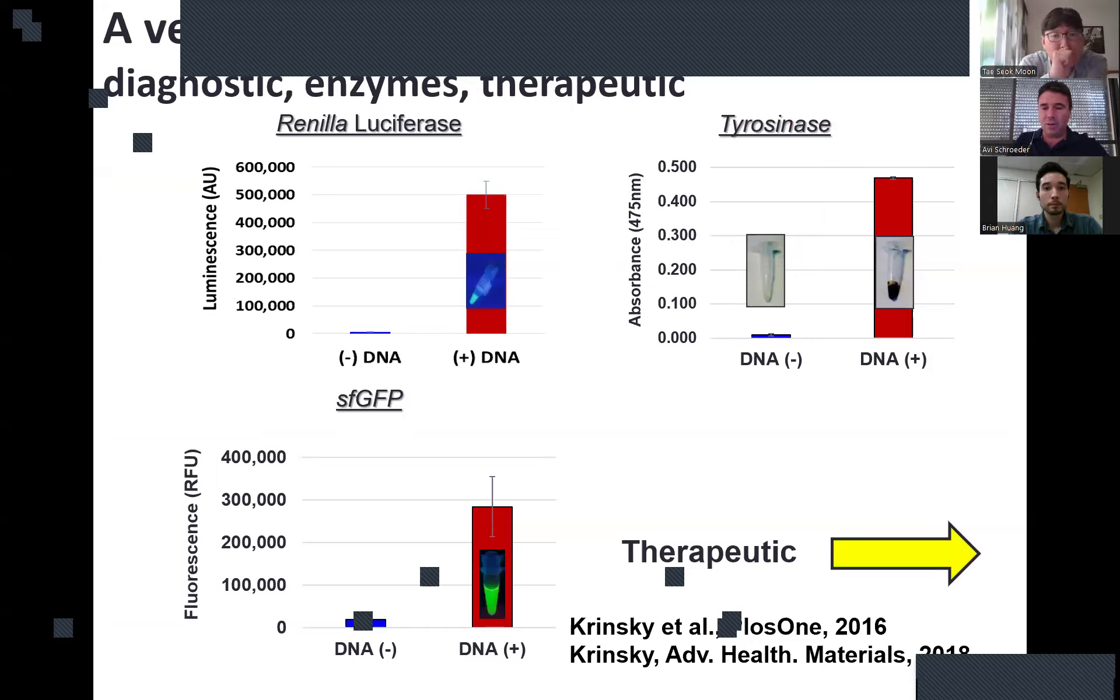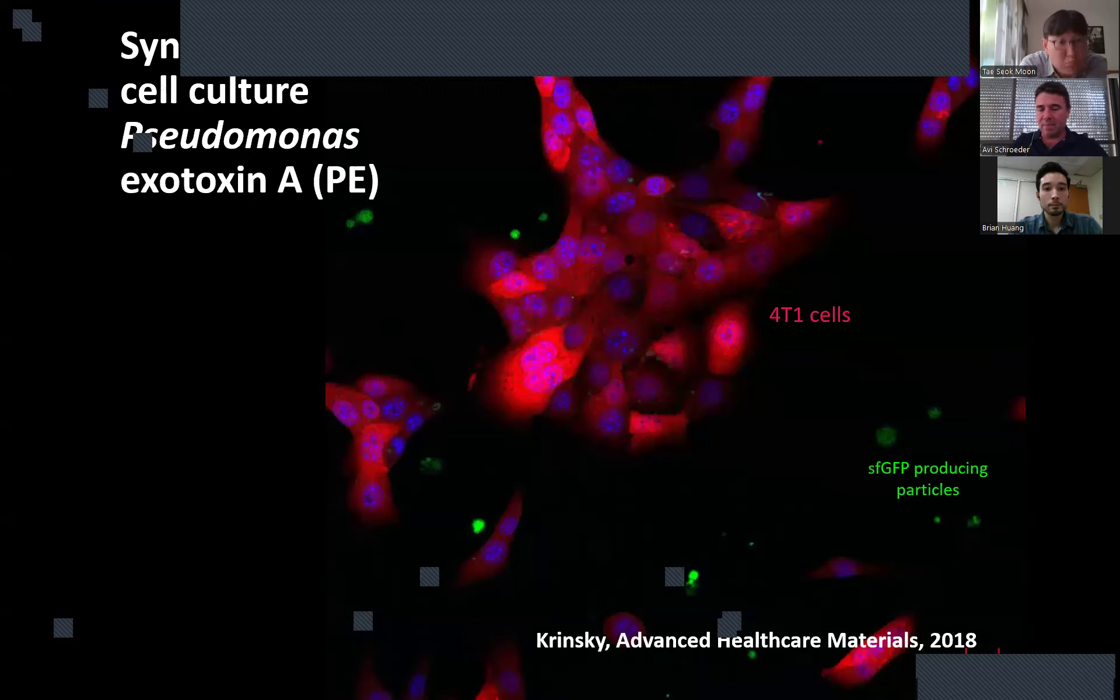What could we actually use them for? We could produce therapeutic proteins. This is a study we carried out together with Tel Aviv University. We looked at manufacturing Pseudomonas exotoxin A. This is a toxic protein and enough of one to 10 copies of this protein to actually kill a cancer cell. You can notice in culture, these are triple negative breast cancer cells. In green are the synthetic cells that are churning out this Pseudomonas exotoxin A. You can notice the kill zone around each one of these synthetic cells.